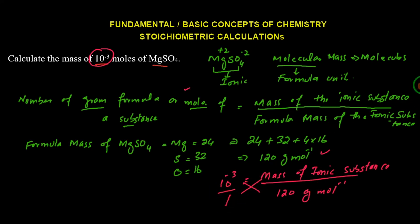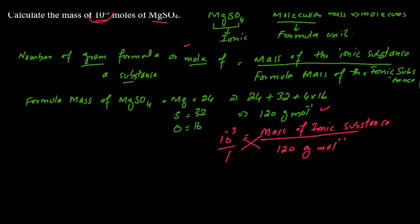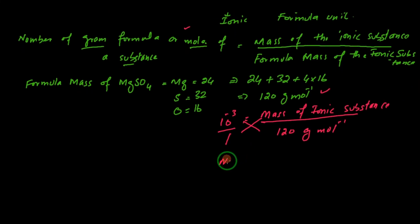Cross multiply and we have the unknown quantity. Mass of ionic substance is equal to 10^-3 multiplied by 120 grams per mole. When we multiply, the answer will be 0.12 grams.